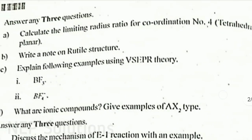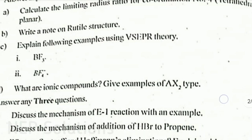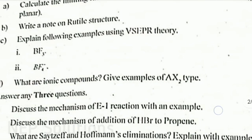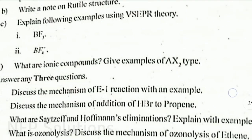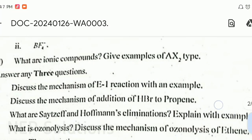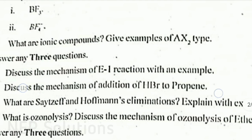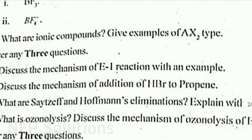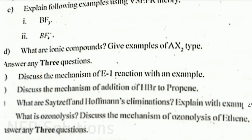Next section — answer any 3 questions. A. Discuss the mechanism of E1 reaction with an example. B. Discuss the mechanism of addition of HBr to propene. C. What are the sites of Saytzeff and Hofmann's eliminations? Explain with examples. D. What is ozonolysis? Discuss the mechanism of ozonolysis of ethene.